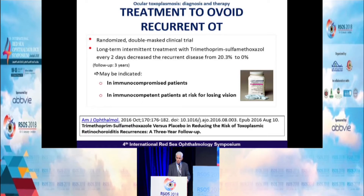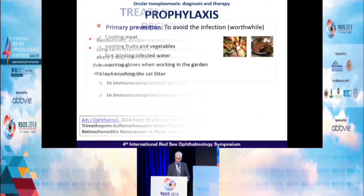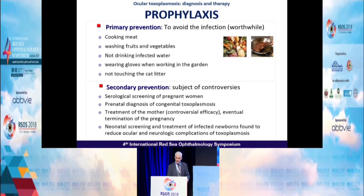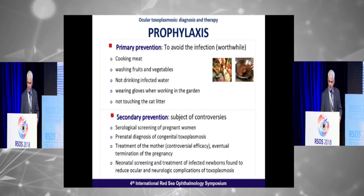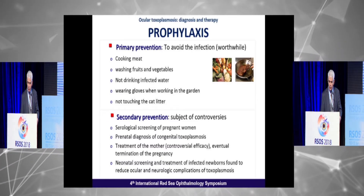Never use steroids alone without associated antitoxoplasmic drugs. To avoid recurrent ocular Toxoplasmosis, long-term treatment with trimethoprim-sulfamethoxazole every two days can be used to decrease the risk of recurrences in specific situations — mainly immune-compromised patients and patients at risk for losing vision. Primary prevention to avoid infection is very important; secondary prevention remains a subject of controversy.